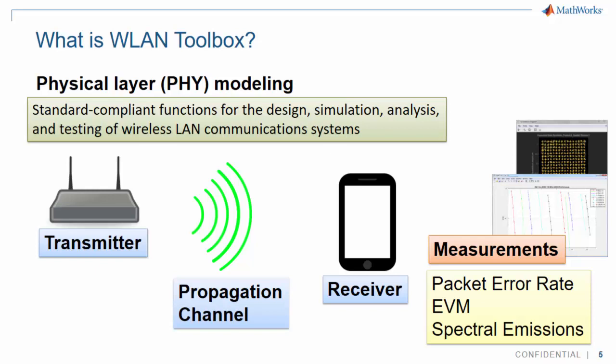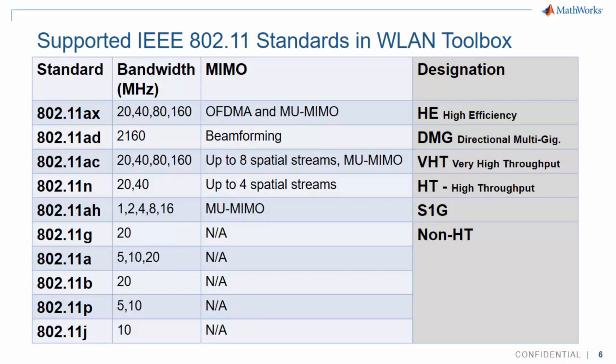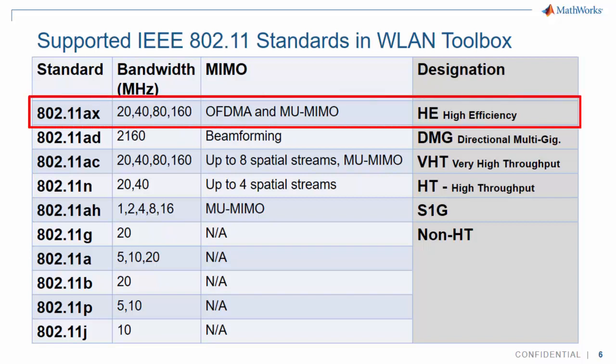Wireless LAN Toolbox offers extensive modeling of wireless LAN transmitter, propagation channels, and receiver, including packet error rate, EVM, and spectral emission measurements. It supports all the standards listed here, with 802.11ax being the latest addition.